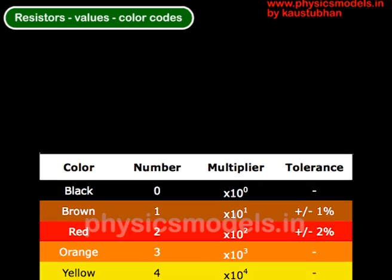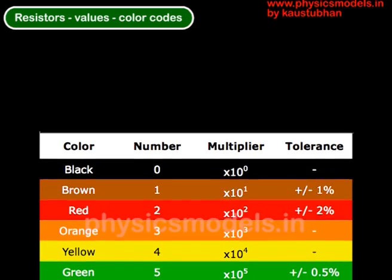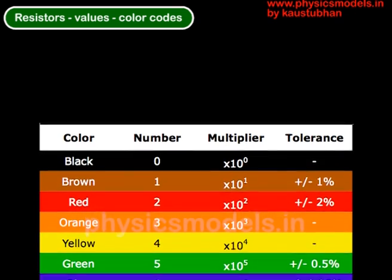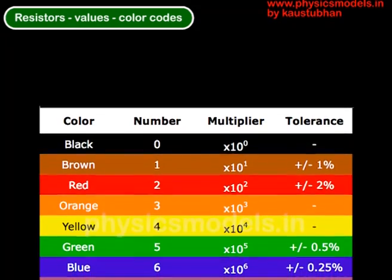Now looking at the four bands that are there on the resistor, each band and its position has an importance. So let's take a simple example of all the four bands being of red color. Just an example.